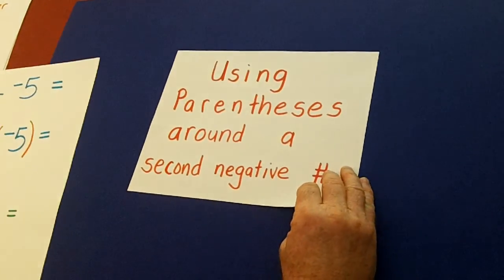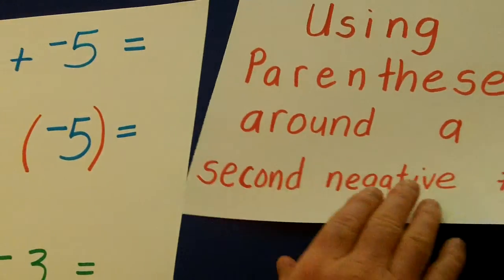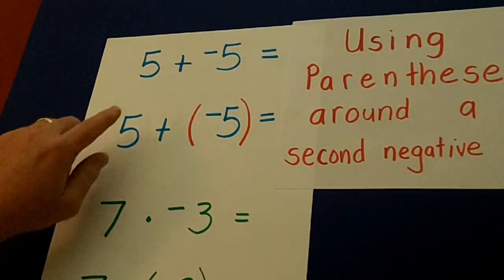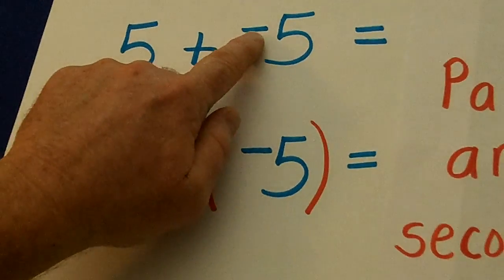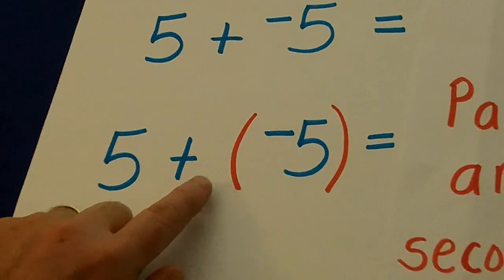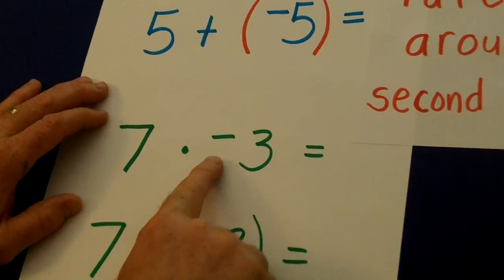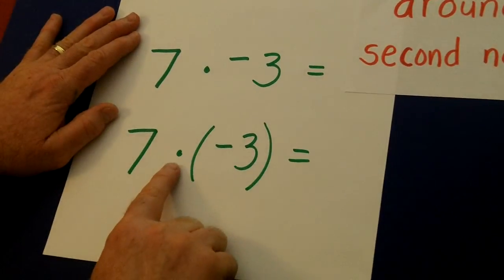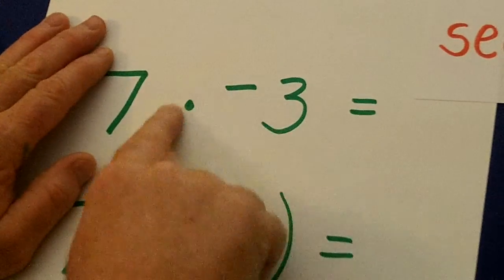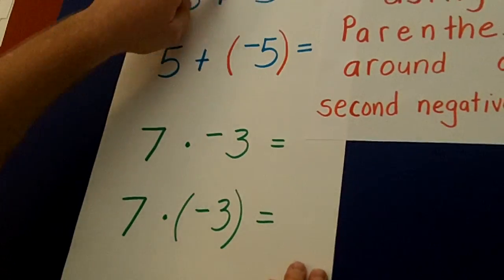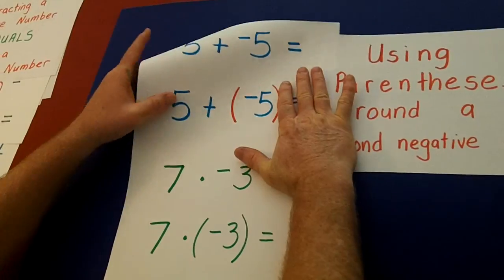Sometimes in our unit, we're going to use parentheses around a second negative number. Usually on tests and in our books, when they have 5 plus a negative 5, the way they will write it in the book is to have parentheses around that second negative number. Or 7 times a negative 3, what they do is they go 7 times parentheses negative 3. They do this so you don't get those two symbols mixed up. Those parentheses better help you see what the real problem is.